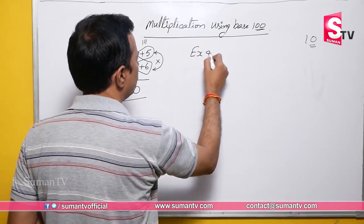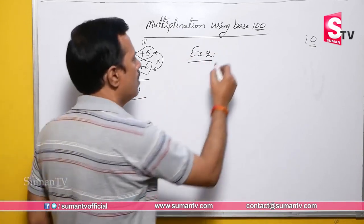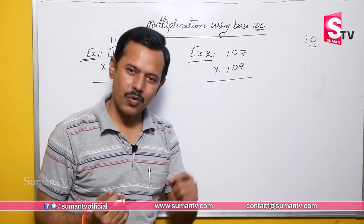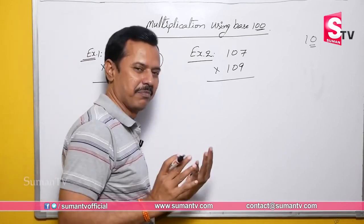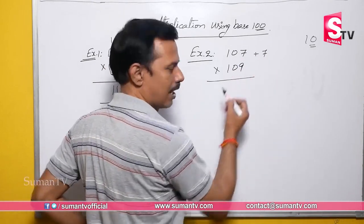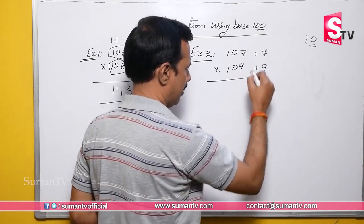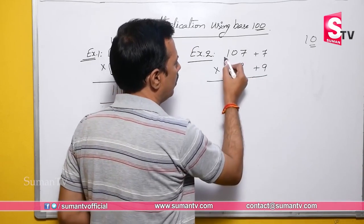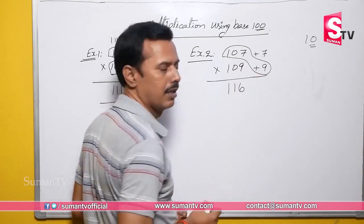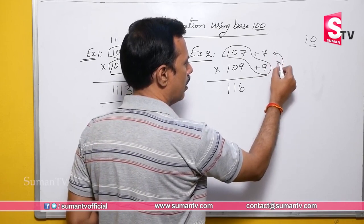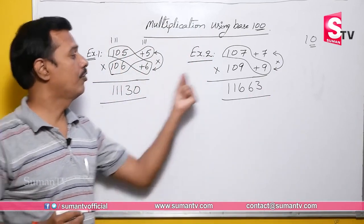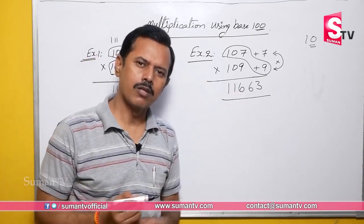Example: 107 into 109. Here we have 2 digits correct on the right side. 107 is 7 more than 100 — plus 7. 109 is 9 more than 100 — plus 9. This is one diagonal. 107 plus 9 is 116 — that is the left part. The right part: 7 times 9 is 63. So the answer is 11663. How beautiful and simple — one step, left to right, answer complete. Beauty technology!